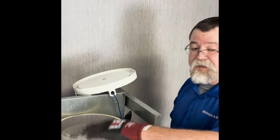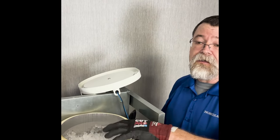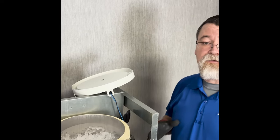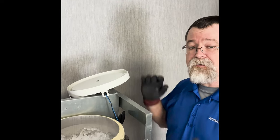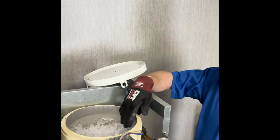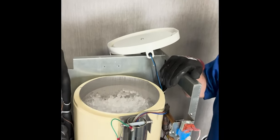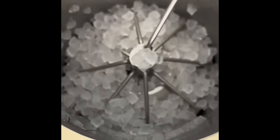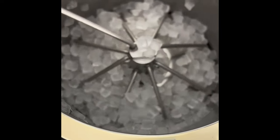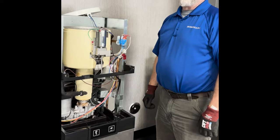At this point, you want to make sure the bin is empty of ice. You can either empty the bin out before you start taking the panels off while the unit's still powered up, or you can actually take the bin top off and physically remove the ice from the storage bin.